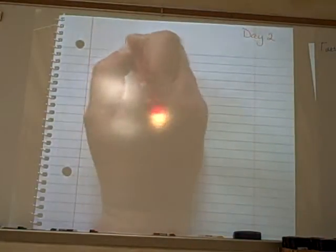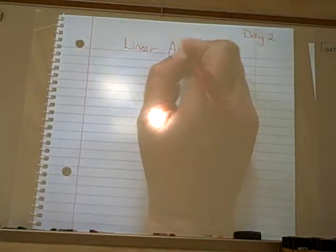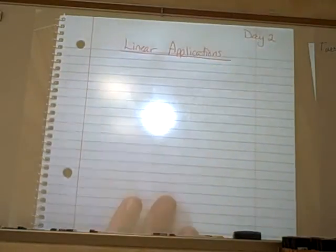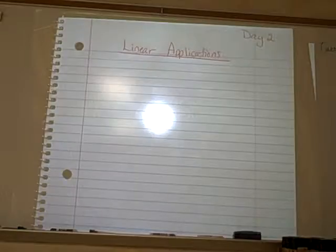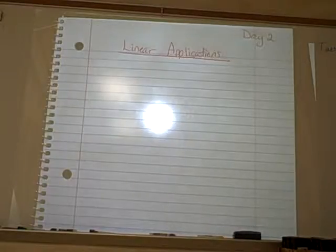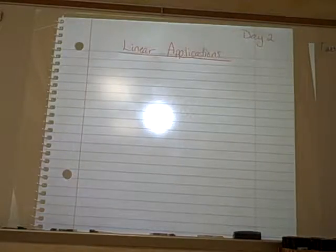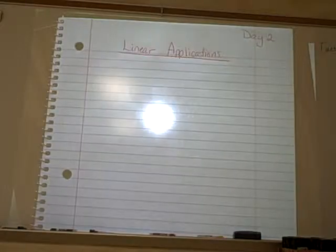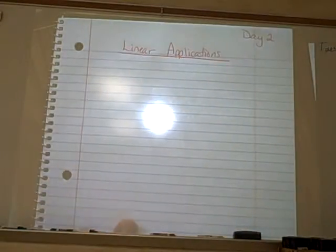We're on day two of unit five. This is called linear applications. The word linear means it's going to be a line on the graph — if you graphed it, it would make a straight line. Applications in math usually means word problem type situations, or real life situations — how would you use this math? Which is kind of deceiving because in real life there's usually some computer program or calculator that'll do it for you. But this is math world.